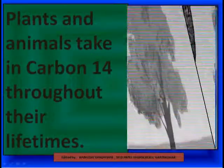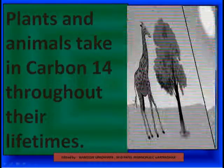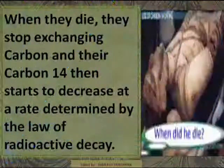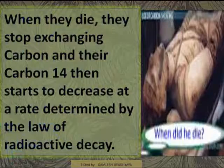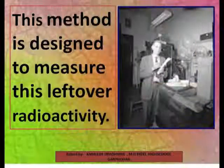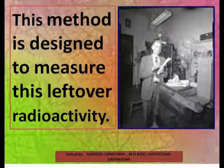Plants and animals take in carbon-14 throughout their lifetime. When they die, they stop exchanging carbon and their carbon-14 then starts to decrease at the rate determined by the law of radioactive decay. This method is designed to measure this leftover radioactivity.